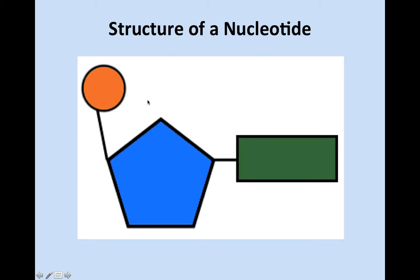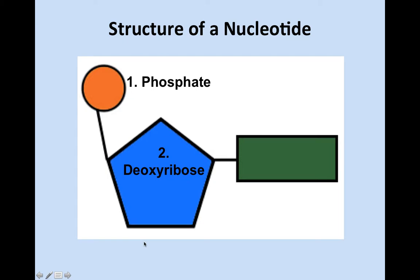Let's label the nucleotide diagram. Put a number one in the circle — that is the phosphate group. The phosphate 'P' is the unique thing your nucleic acids are going to have. Put a number two in the little pentagon shape — that is deoxyribose, in parentheses write 'sugar,' because that's what it is.